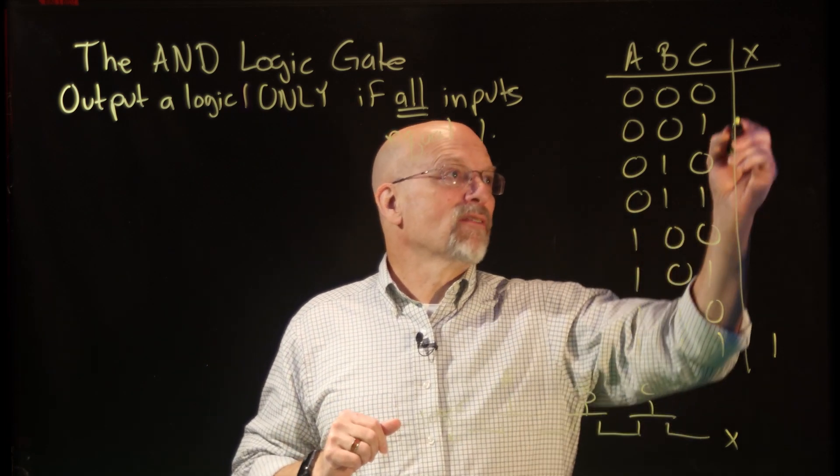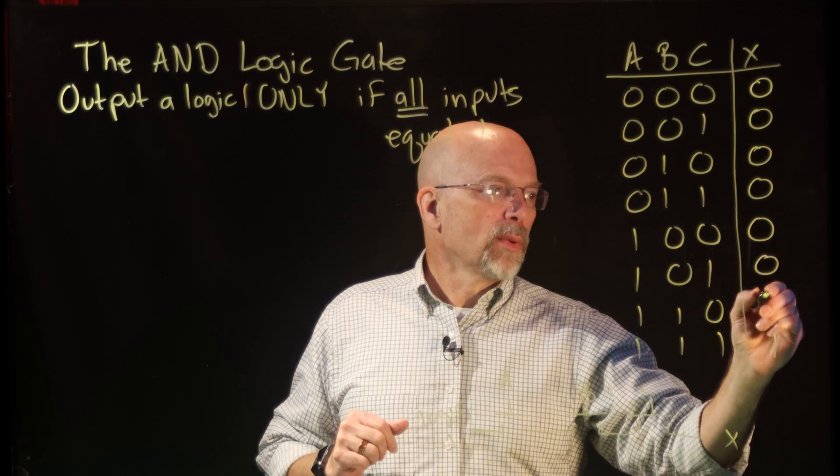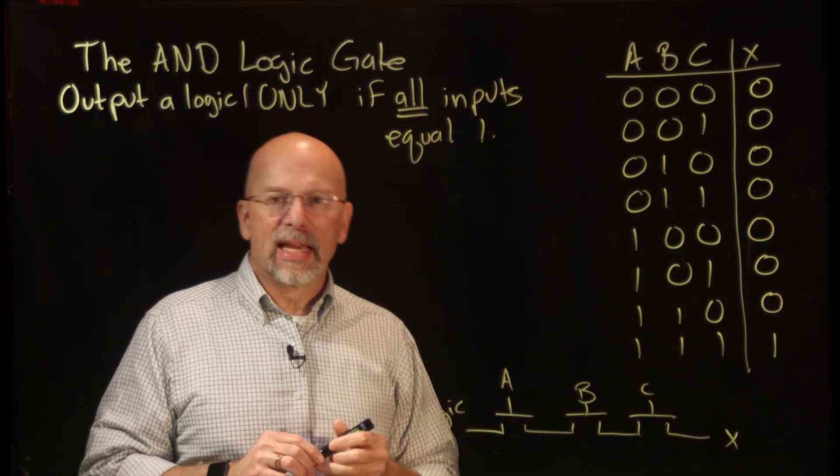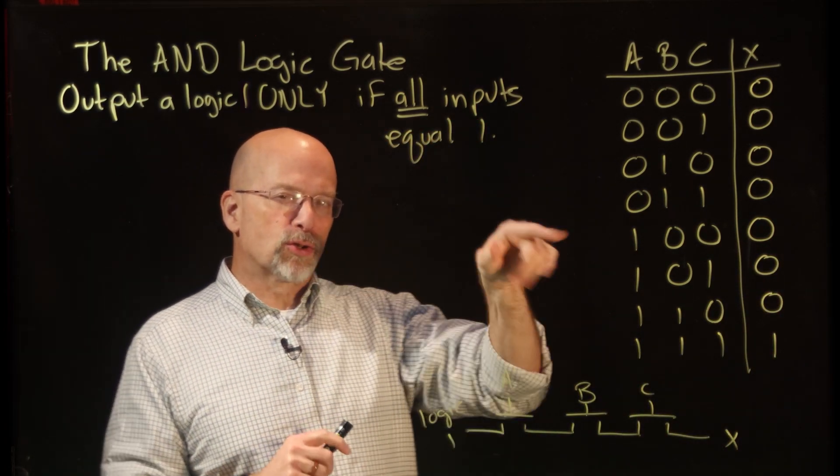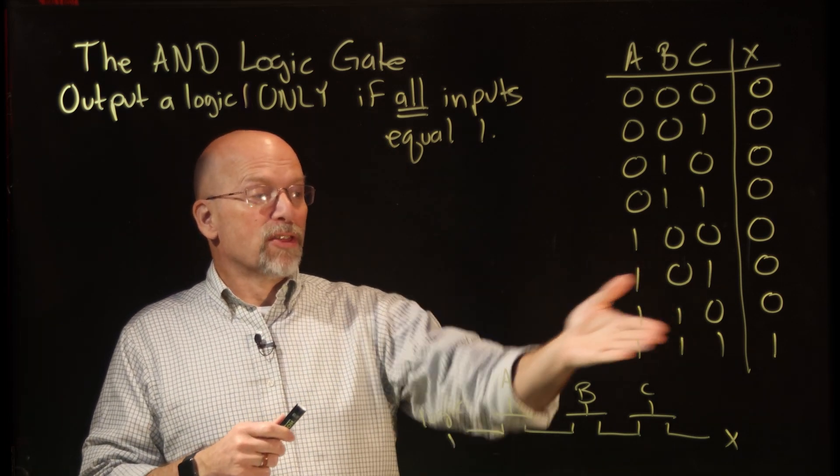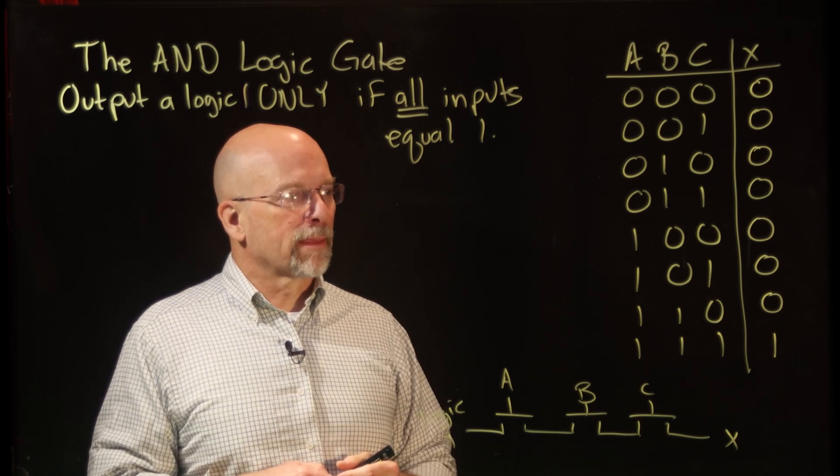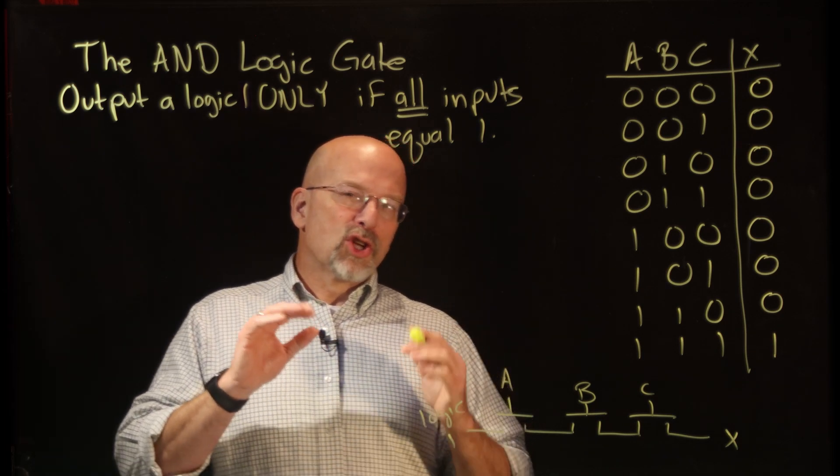All the other cases, every single one of them, these are all zero. So what we see is that the AND gate has a unique condition in the truth table - a unique condition that outputs a 1. In this particular case, the unique condition is when we output a 1.